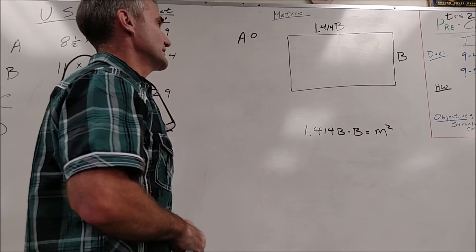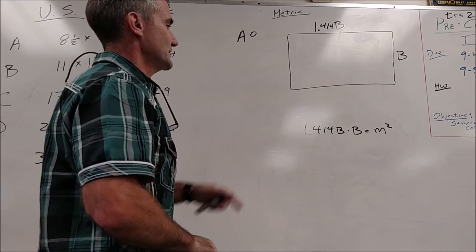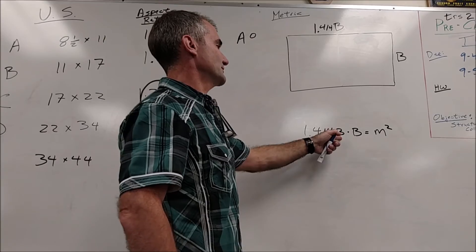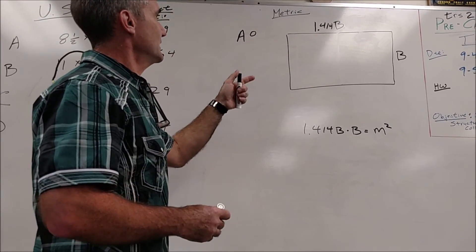And that's going to be in millimeters. I don't really know what they are off the top of my head. But I'll do this times this equals 1 square meter and solve for B. Those are the dimensions. But what's cool about this, that's A0 paper.